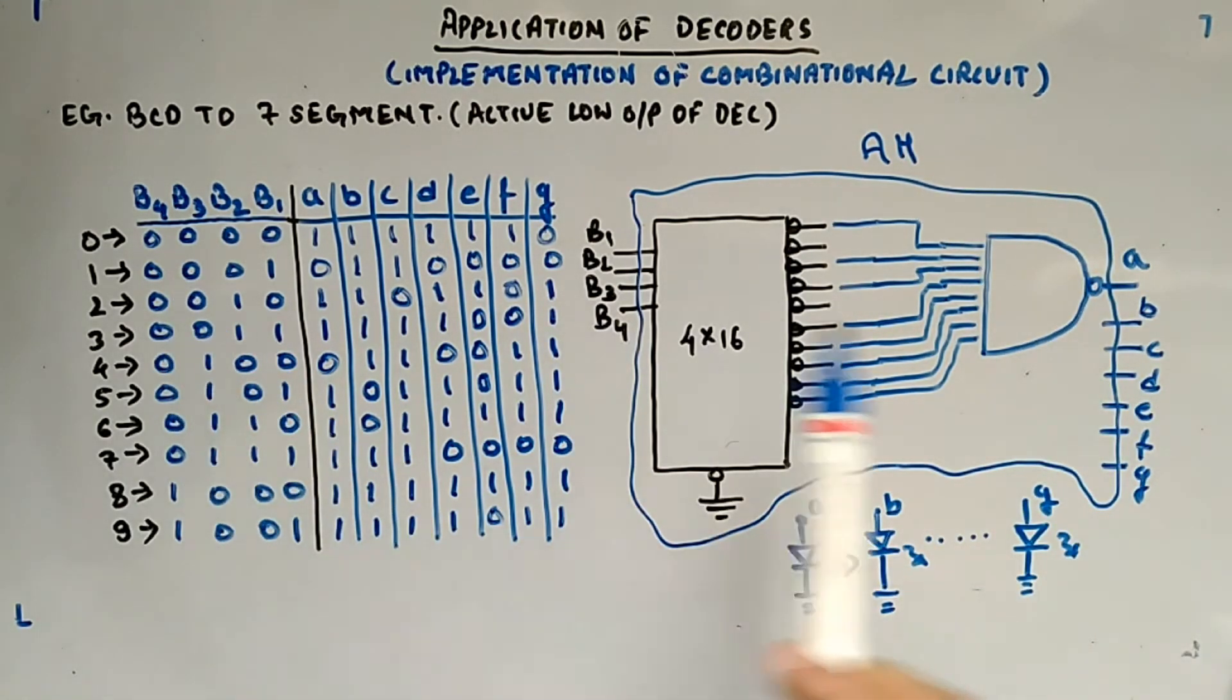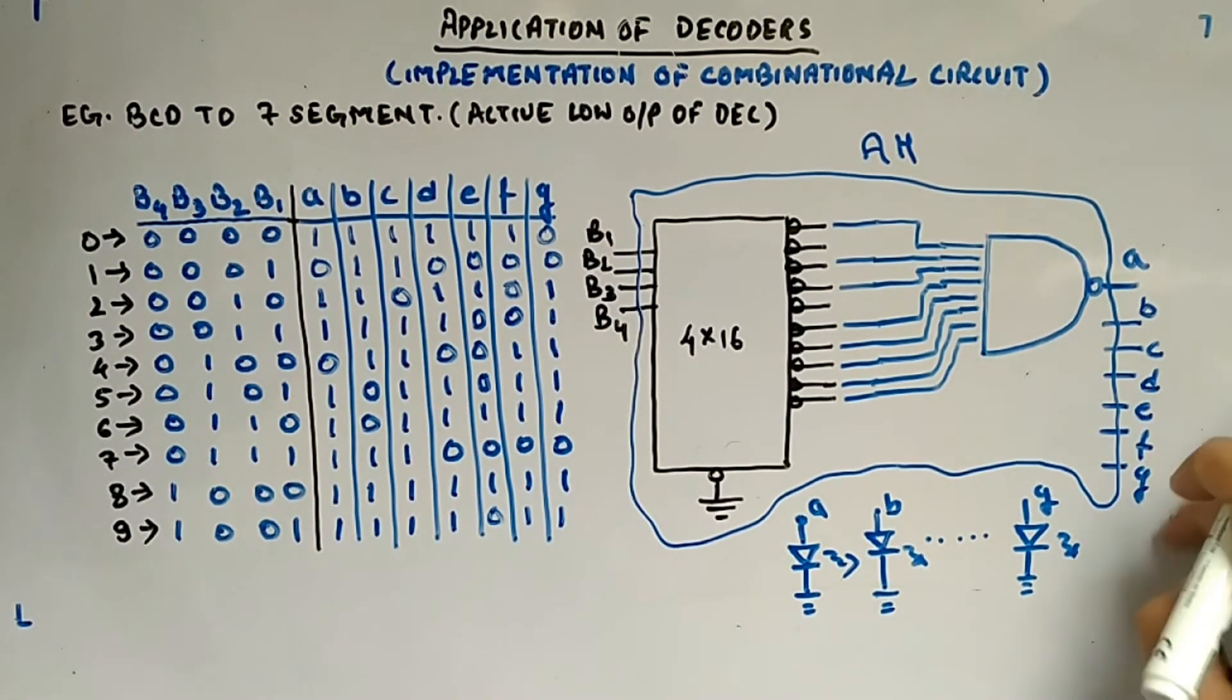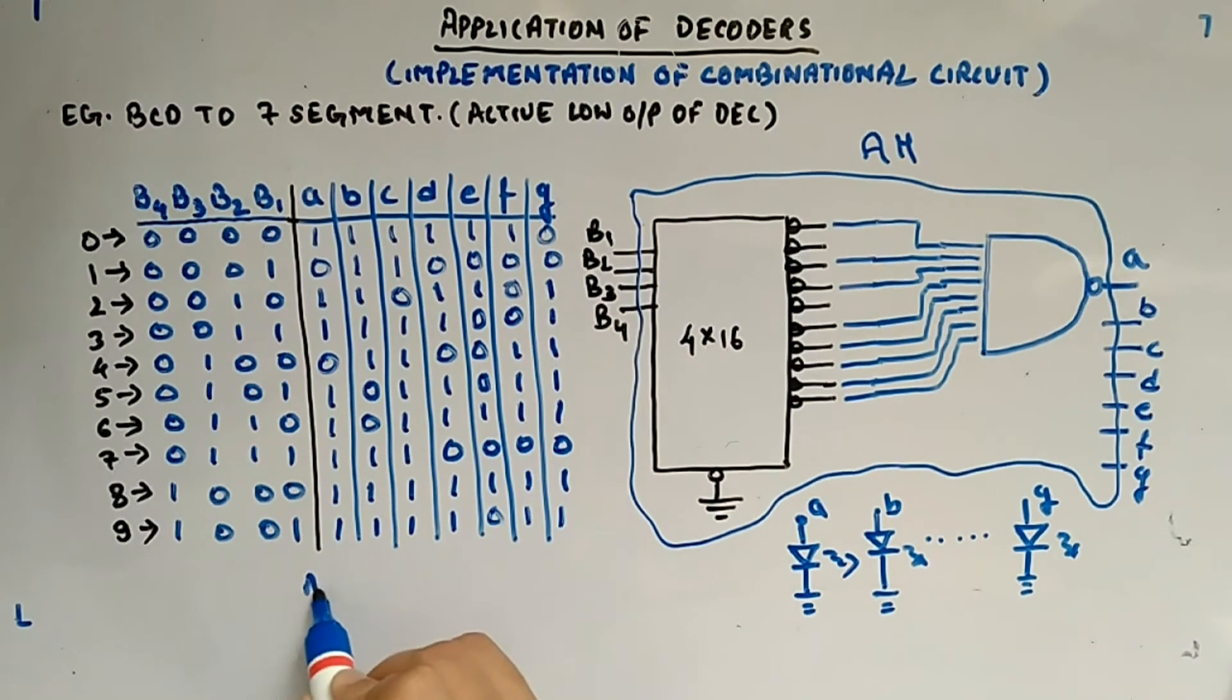Similarly for B also it will generate 1, 1, 1, 1, 1, 1, 1, then 0, likewise it will generate. So it is an active high type of truth table, you can see, this is active high type, this circuit is also active high type.